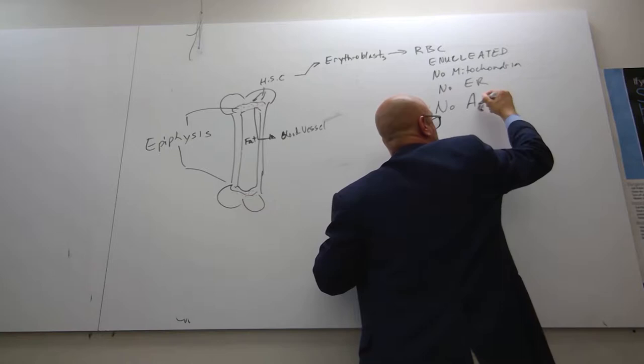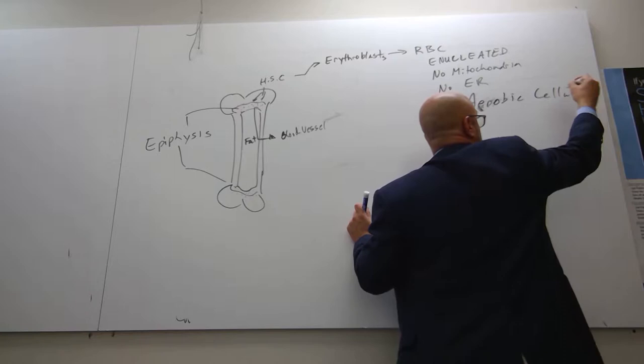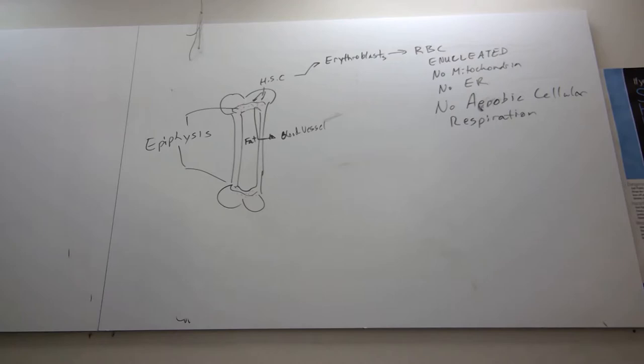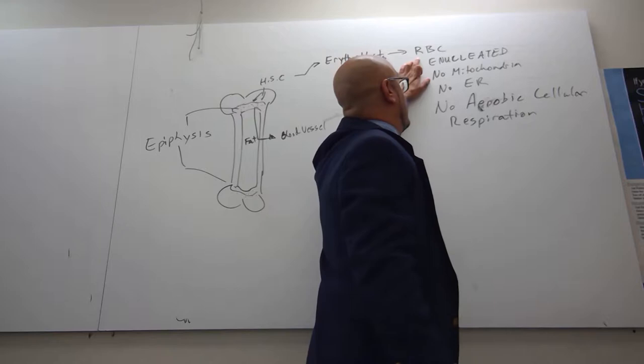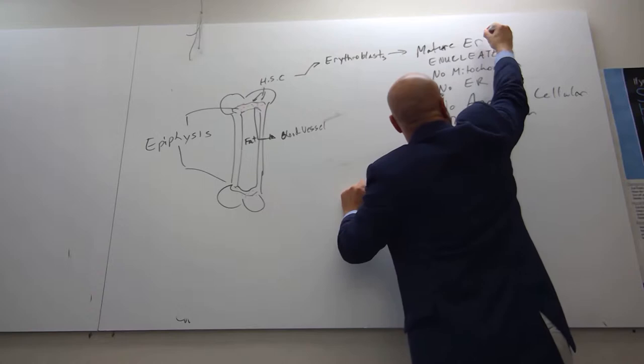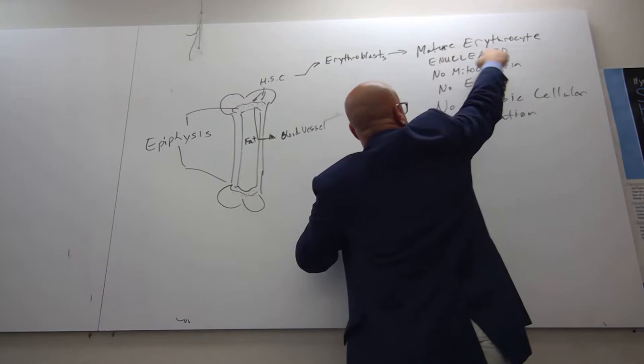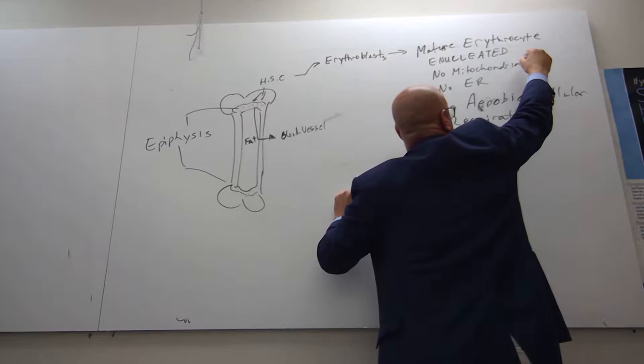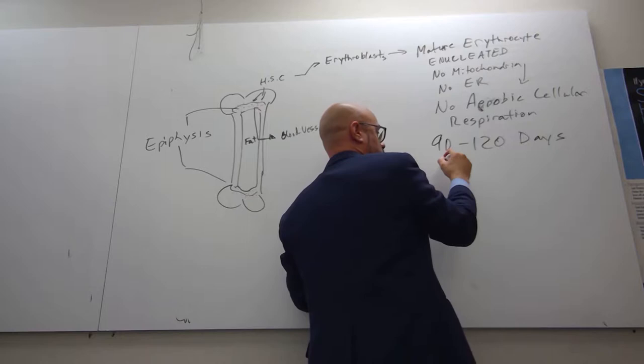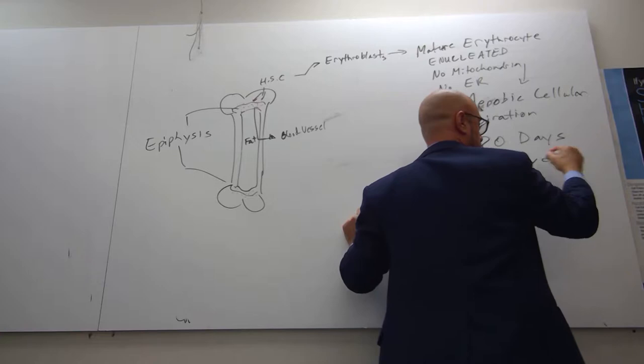Because there's no mitochondria, there's no aerobic cellular respiration. The red blood cell doesn't use the oxygen it carries for anything other than to bind and deliver it to tissue. The mature erythrocyte is enucleated, has no mitochondria, no ER, and no aerobic cellular respiration. It can only live 90 to 120 days. The spleen recycles the red blood cell.